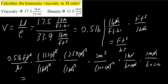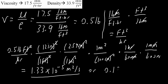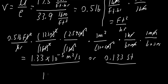The result is 1.33 times 10 raised to negative 5 meters squared per second. However, in SI units we also have auxiliary units which are allowed. This can also be expressed as 0.133 stokes, since 1 stoke equals 10 to the negative 4 meters squared per second. Both answers are correct.